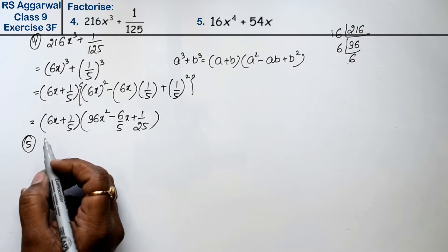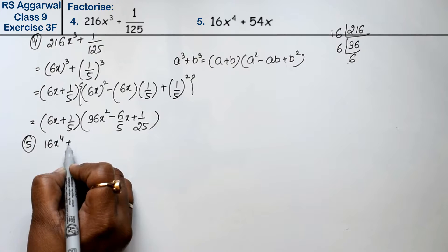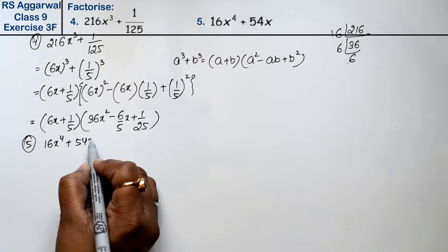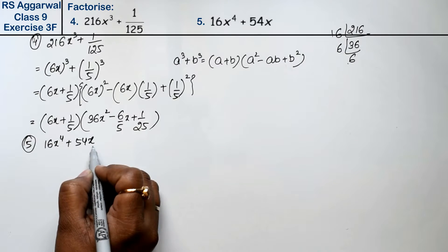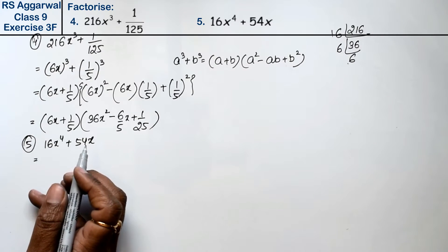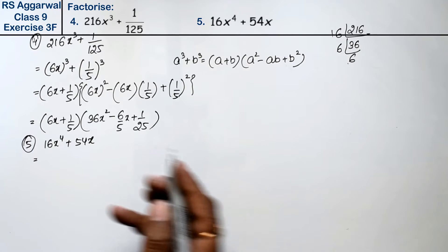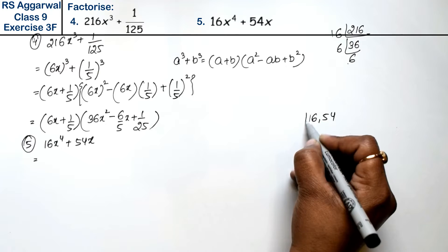Question number 5 is 16x to the power 4 plus 54x. Now let's see, the first rule of factorization is to take out common factors. How much is common?